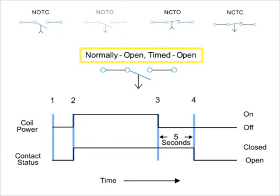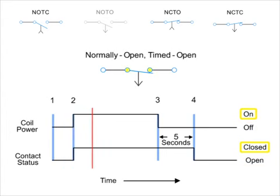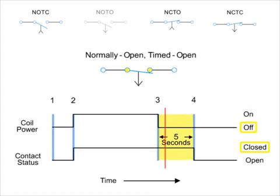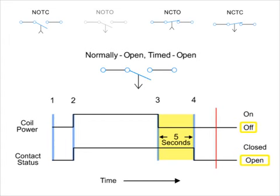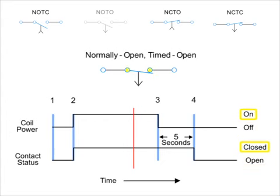Next, we have the normally open, timed open contact. Similar to the normally open, timed closed contact, this type of contact is normally open when the coil is unpowered or de-energized, and closed by the application of power to the relay coil. However, unlike the NOTC contact, the timing action occurs after the coil is de-energized for five seconds.